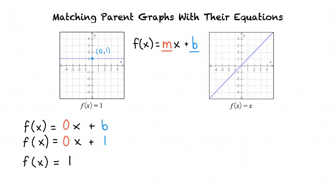Now let's take a look at f(x) = x. The line does intersect the y-axis, but nothing is written in for b. The reason is that f(x) = x intersects the y-axis at the origin with coordinates (0, 0).